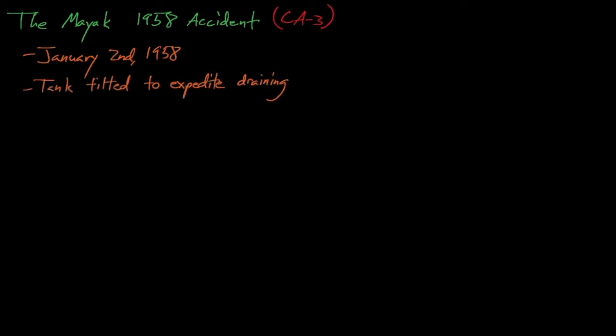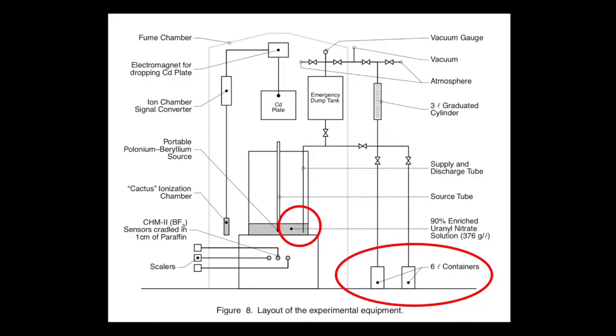The container's base was actually bolted to the platform it was resting on to prevent this kind of unsafe behavior, so the experimenters actually unbolted the container from its stand in order to tip it over. Unbolting the container and tipping it over caused the remaining solution, which was spread out over the bottom of the large diameter vessel, to pool into the corner of the vessel. Moving the solution into this more compact shape reduced the surface area of the solution and thus also reduced its degree of neutron leakage, which provided a massive reactivity insertion.